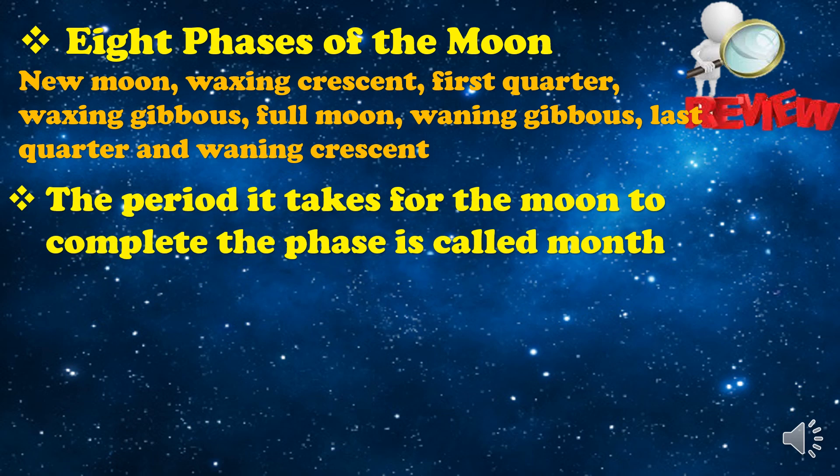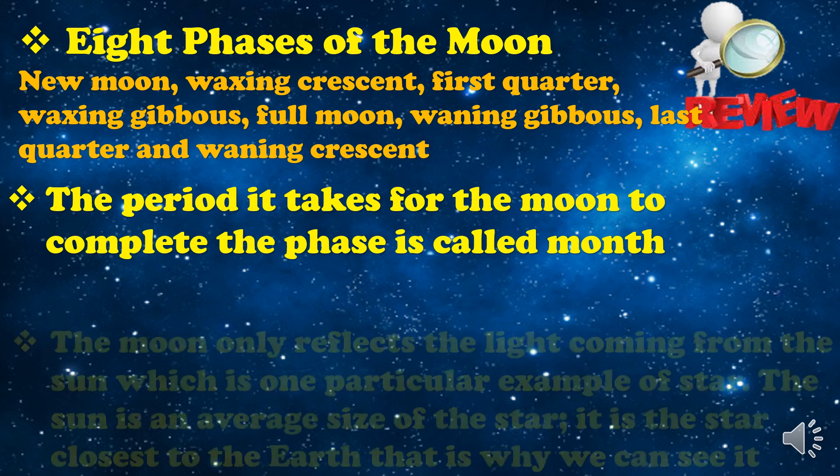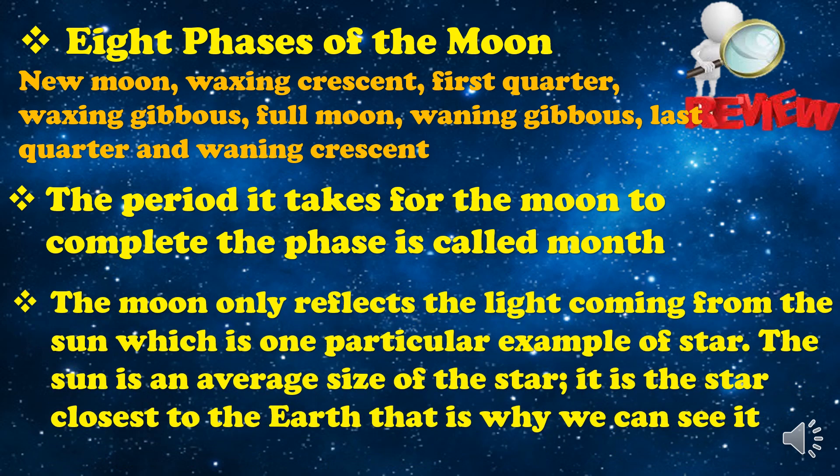We had also discussed that the period it takes for the moon to complete its phases is called a month. The moon only reflects the light coming from the sun, which is one particular example of a star. The sun is an average-sized star and is the star closest to the earth, that is why we can see it.